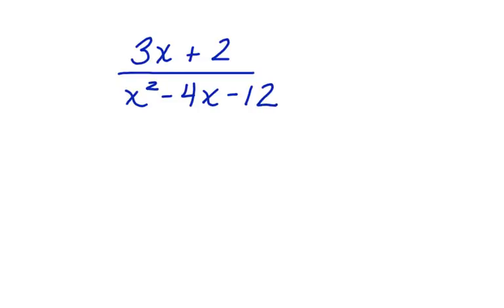We want to find the values that makes each factor equal to 0. Well, in order to do that, we need to factor. Let's first look at the numerator. We can't factor anything in the numerator, so we're going to leave it alone. We're going to bring down the 3x plus 2.